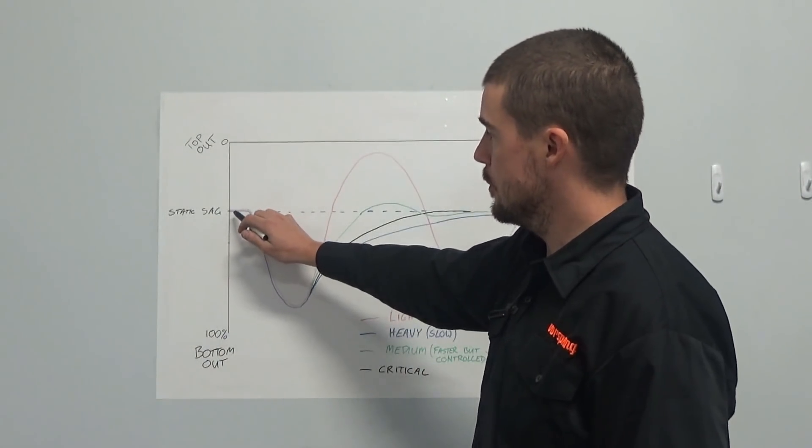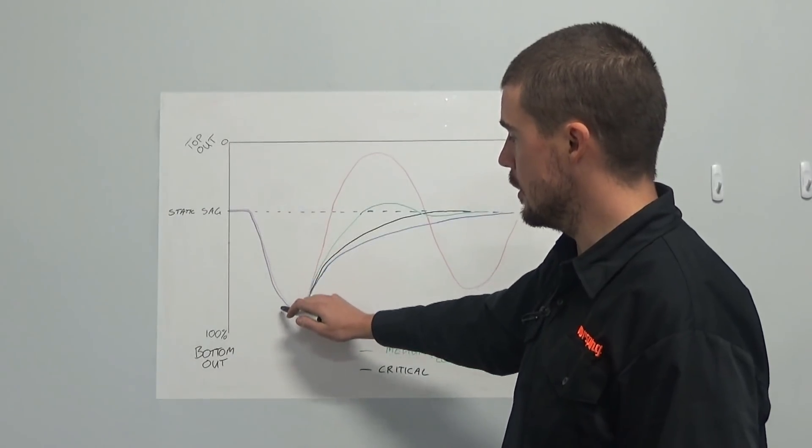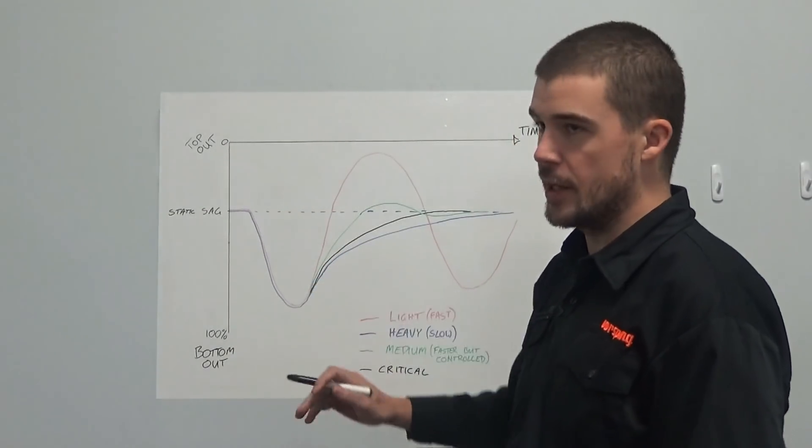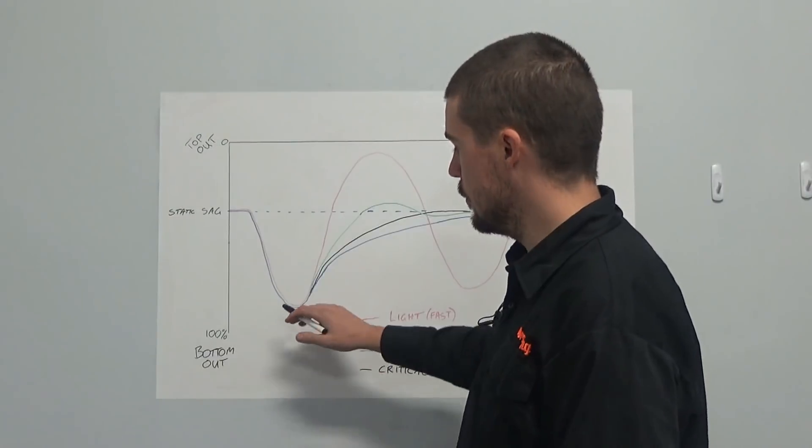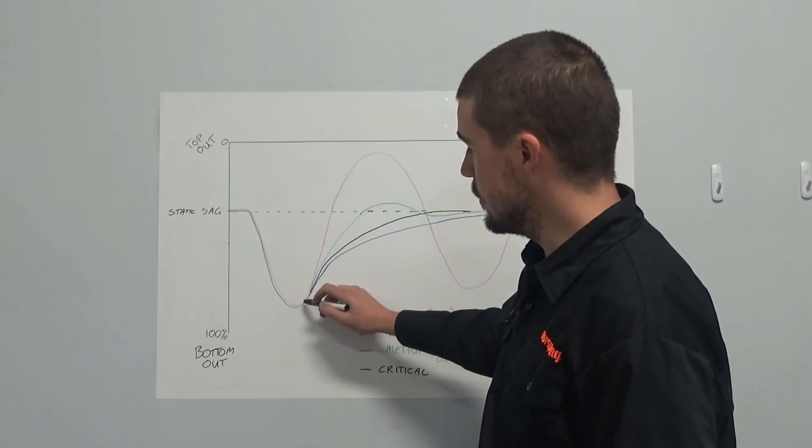So we hit a step. The suspension compresses at a certain rate up until the bike has been lifted up over the bump and then begins to extend again.